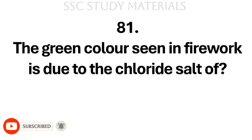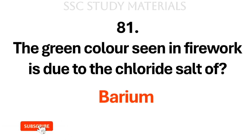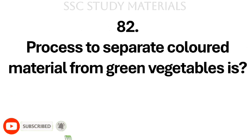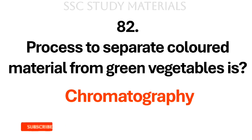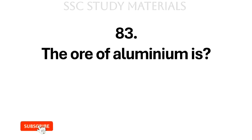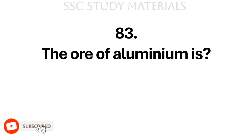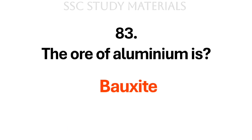Question No. 81: The green colour seen in fireworks is due to the chloride salt of? Answer: Barium. Question No. 82: Process to separate coloured material from green vegetables is? Answer: Chromatography. Question No. 83: The ore of aluminium is? Answer: Bauxite.